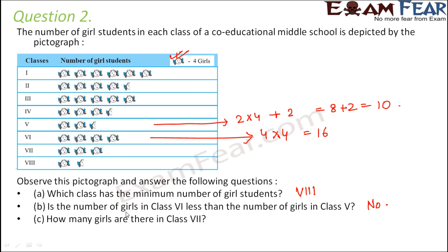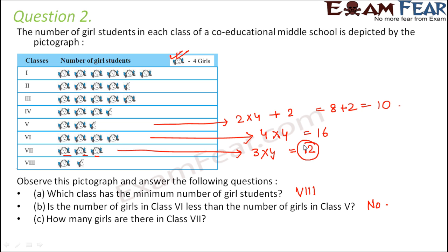Third question: how many girls are there in class 7? So this is class 7 and in class 7, how many pictures do you have? 1, 2, 3. So 3 into 4, because 4 girls is represented by each picture. So 3 into 4 would be 12. So there are 12 girls in class 7.